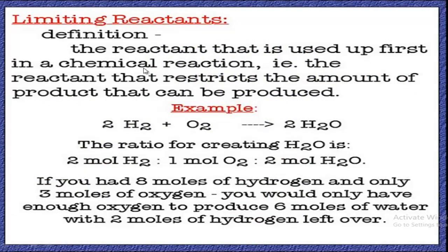First, limiting reactant: the reactant that is used up first in a chemical reaction — that means the reactant that restricts the amount of product that can be produced — is called the limiting reactant. You can also define it as: among the reactants, the one present in lesser amount is the limiting reactant, or the reactant which finishes first in the reaction is called the limiting reactant.